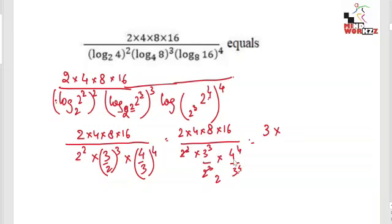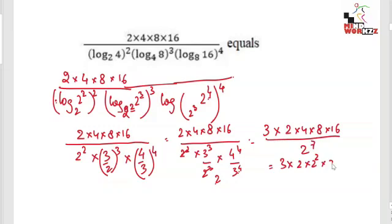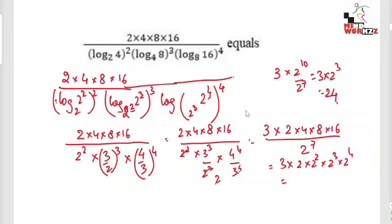So 2⁸ divided by 2 gives 2⁷. Then 3 times 2 times 4 times 8 times 16 divided by 2⁷ equals 3 times (2·2²·2³·2⁴) = 3 times 2^(1+2+3+4) = 3 times 2^10 divided by 2⁷ = 3 times 2³ = 3 times 8 = 24. The answer for this question is 24. The key trick is recognizing this part of the structure.